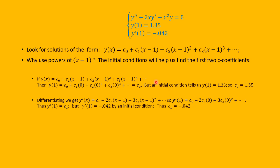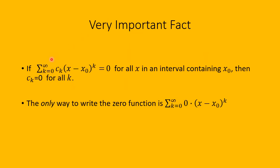Hopefully now we can see why we looked at an expansion in terms of powers of x minus 1. Here's an important fact: if the sum from k=0 to infinity of cₖ(x−x₀)^k equals 0 for all x in an interval containing x₀, then cₖ = 0 for all k. The only way to write a zero function as a power series is with all coefficients equal to zero.